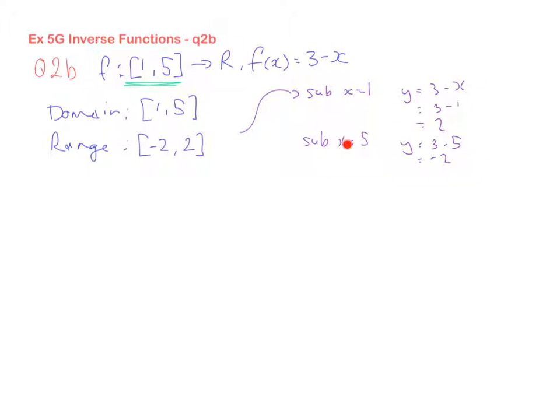This is just your side working out, if that makes sense. So now I've got that. Our next thing we have to do is we say let y equals f of x. So that gives us y equals 3 minus x. So for my inverse, what do I do? I swap x and y around.